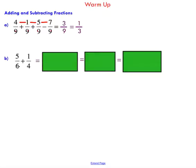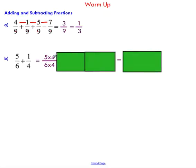Your goal is to make the denominator of each fraction 24, and we do that by multiplying. Think about what can I multiply 6 by to get 24 — the answer is 4. So we're going to multiply both the top and bottom by 4. If I cancel out these 4s, I end up with my original fraction, so I haven't actually changed my expression.